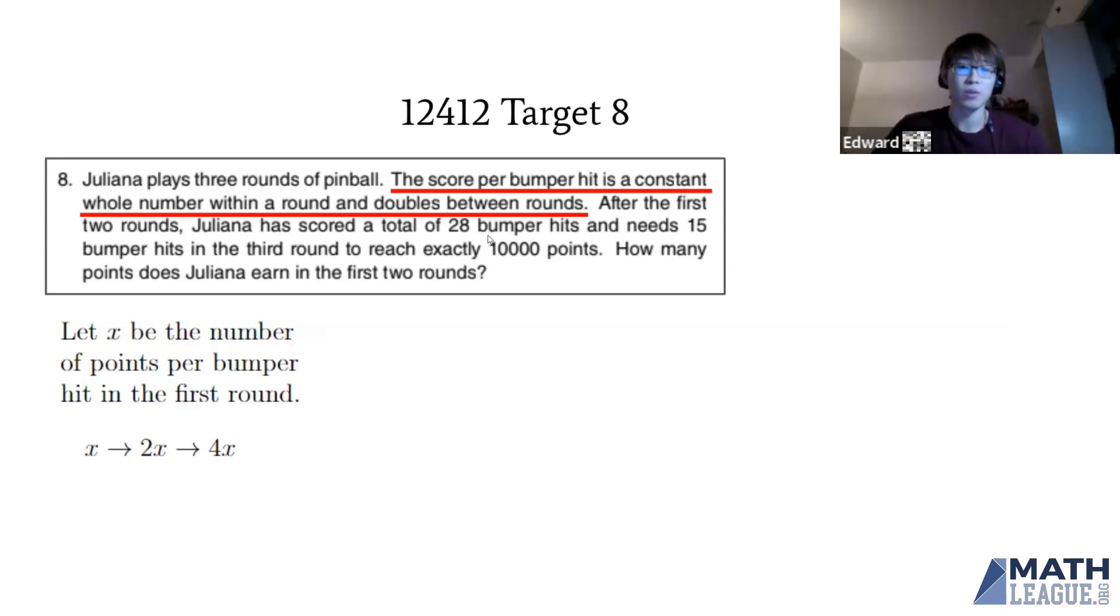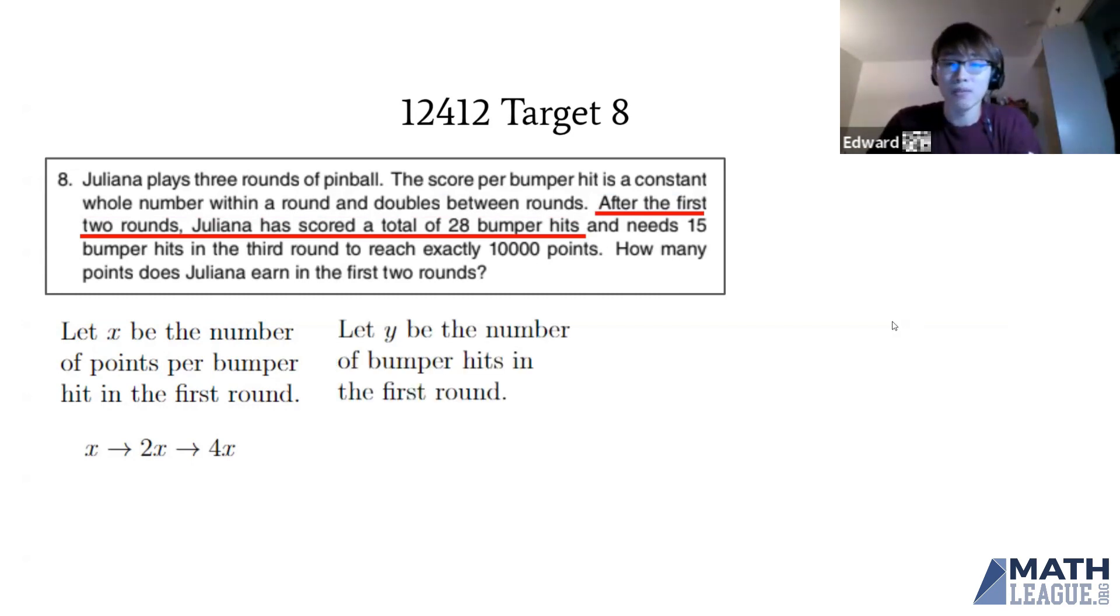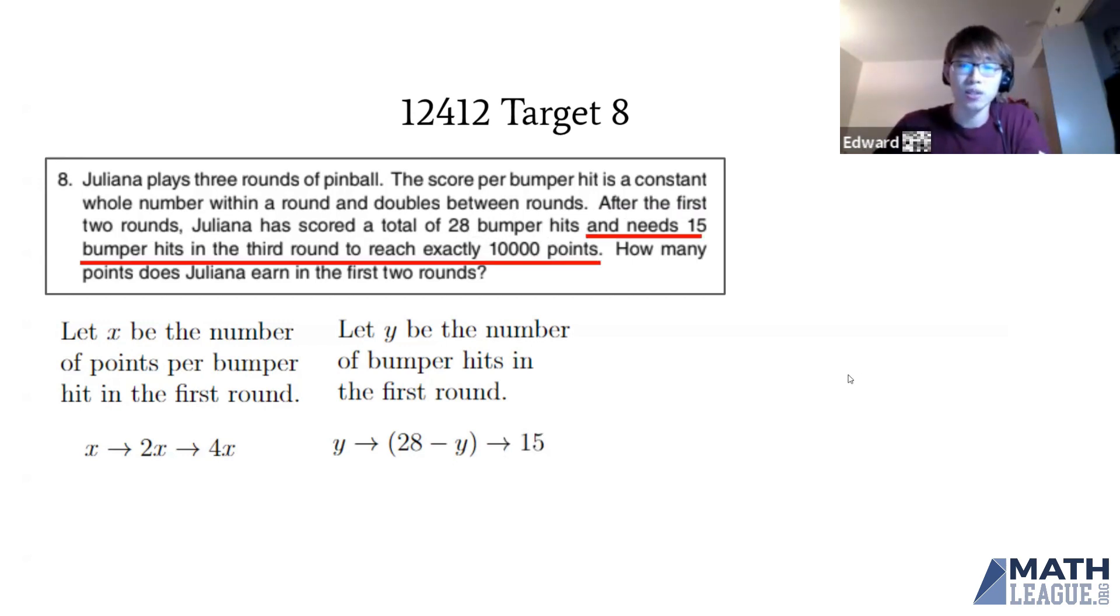Let Y be the number of bumper hits in the first round. Since she scored a total of 28 bumper hits in the first two rounds, she scored 28 minus Y in the second round. She needs 15 bumper hits in the third round to reach exactly 10,000 points.